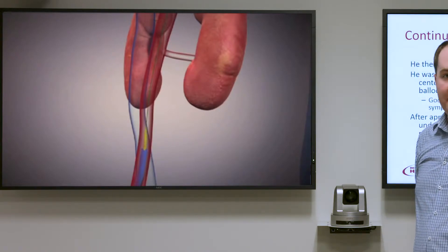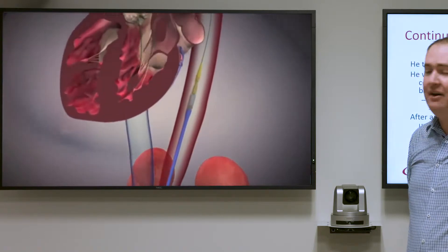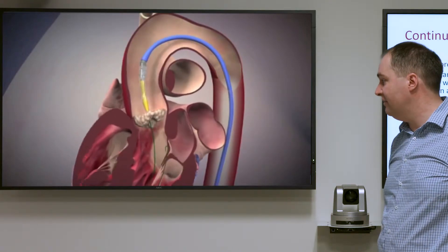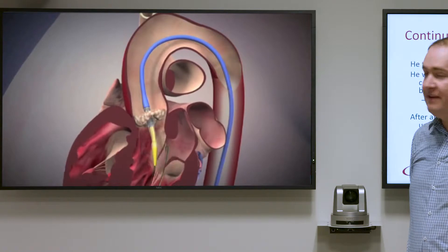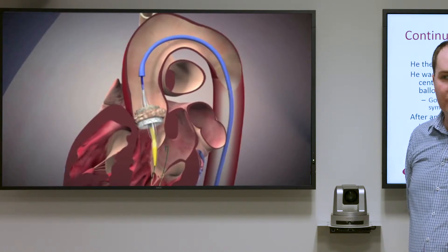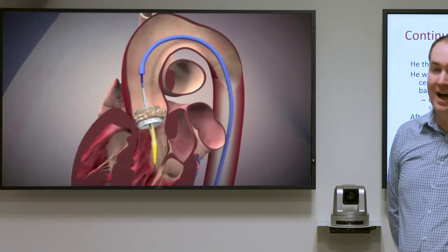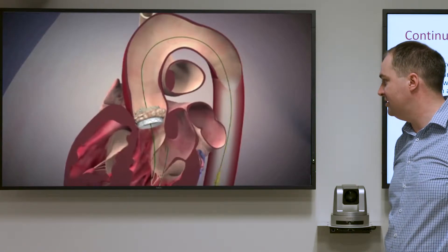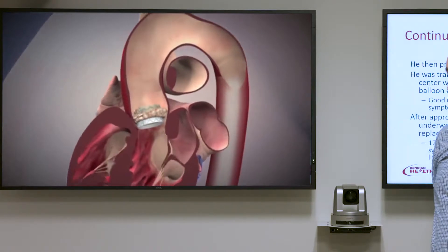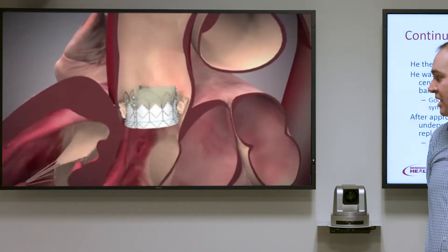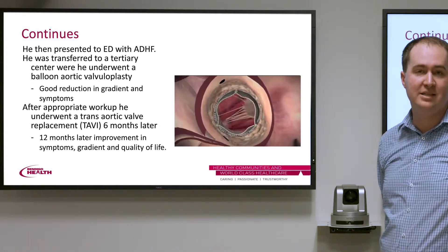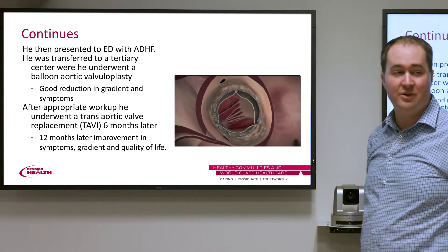Our patient had a good result from the BAV, with reduction in gradient and symptoms. That allowed time to work him up for a transcatheter aortic valve implantation — a TAVI — which he had six months later. You can see the new valve being delivered up through the aorta and inflated within the old valve, pushing it out of the way. Reviewed at 12 months, he had good reduction in symptoms, gradient, and echo features of aortic stenosis. He was complicated by the most common TAVI complication: requiring a pacemaker, which occurs in about 10–20% of patients.